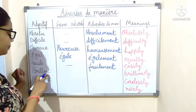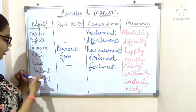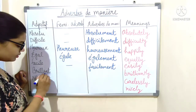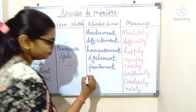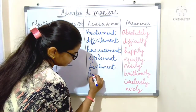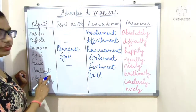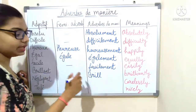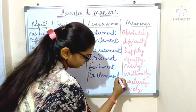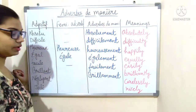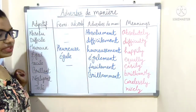Next: 'brillant', which means 'brilliantly'. It ends with A-N-T, so we remove '-ant' and add '-amment': B-R-I-L-L-A-M-M-E-N-T — 'brillamment', which means 'brilliantly'.